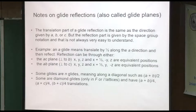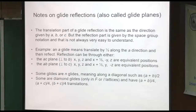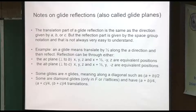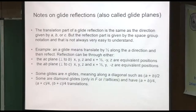To understand N glides it really does help to look at the tables. And then there's a diamond glide, which you only encounter in a cubic space group — it's actually diagonal and divided by four, so it's a one-fourth translation instead of one-half. Those are called diamond glides.